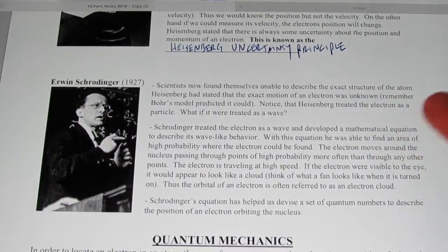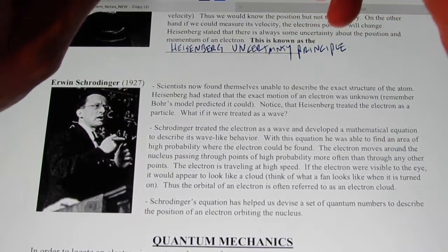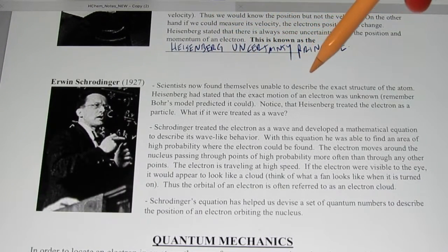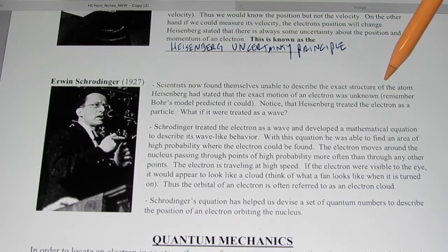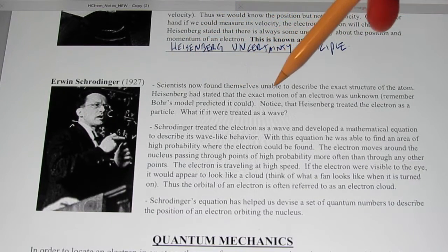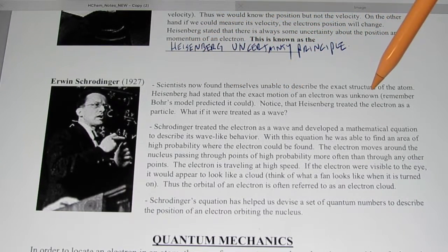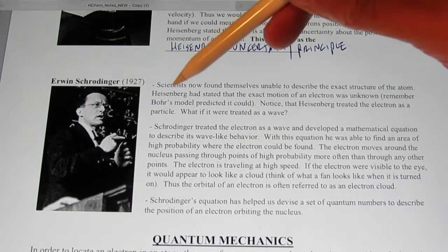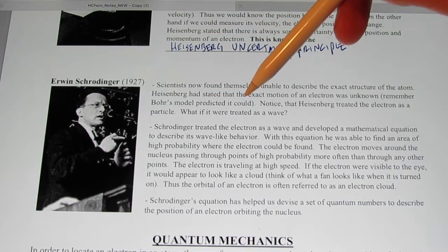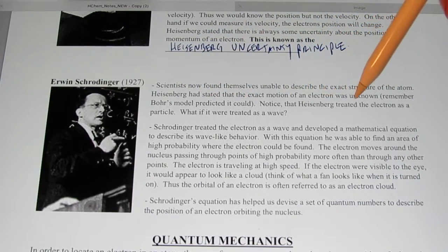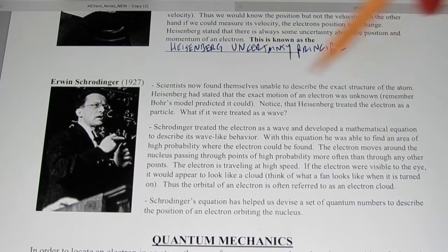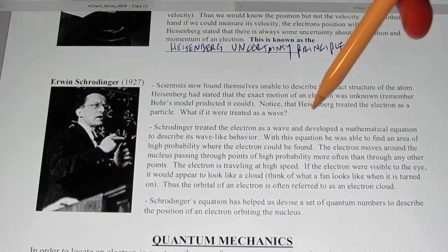Along with Heisenberg was Erwin Schrödinger. Scientists now found themselves unable to describe the exact structure of an atom. Heisenberg had stated that the exact motion of an electron was unknown. Remember, Bohr's model predicted it could be known. Notice that Heisenberg treated the electron as a particle. What if it were treated as a wave?